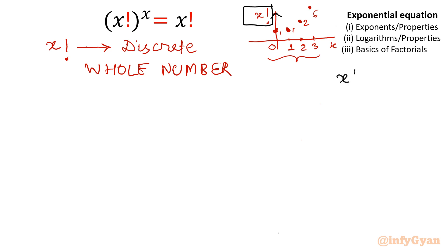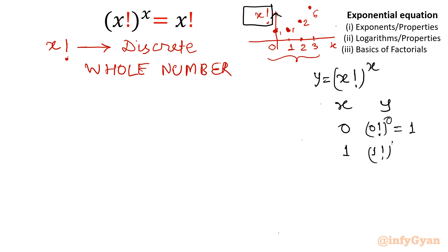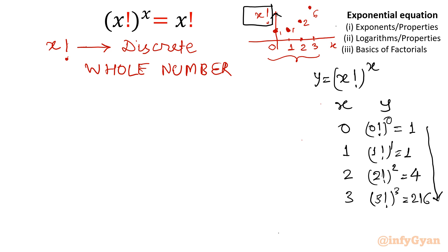Now come to the left-hand side: x factorial raised to the power x. Let me consider this equal to y. At x=0: 0! ^ 0 = 1. At x=1: 1! ^ 1 = 1 — same as x factorial. At x=2: 2! ^ 2 = 4; earlier it was 2. At x=3: 3! ^ 3 = 6 ^ 3 = 216. You can see how rapid the growth of x!^x is — similar to 2^x, 3^x, or exponential functions.